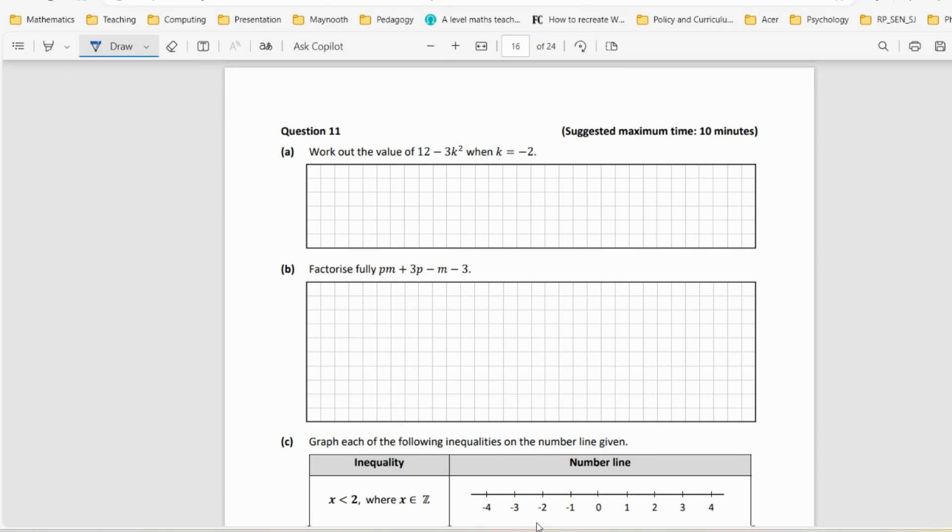Question 11, an algebra question. We're going to find the value of 12 minus 3k squared when k is minus 2. You just substitute in minus 2 wherever you see k, so this is going to be 12 minus 3 times minus 2 squared. So this now, minus 2 squared is 4. I'm not squaring the 3 here; if it was like this I would square the 3, but it isn't, so I'm just squaring the last thing. So that is going to be 12 minus 12, so my answer is 0.